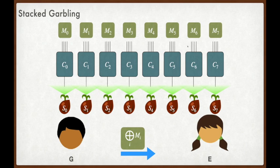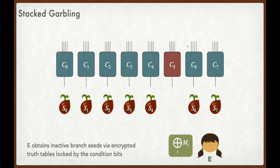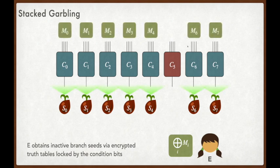The generator stacks together all of the material and sends it across the wire to E. From here, we ensure that the evaluator E will obtain inactive branch seeds via encrypted truth tables. Suffice it to say that it's relatively simple to convey to E each of the seeds for each of the inactive branches. Crucially, we will never send to the evaluator the seed corresponding to the active branch. In general, we need to handle the case where neither player knows which branch is evaluated. Let's suspend that for just a moment and suppose that E did in fact know which branch is evaluated. If she did know that C5 was the active branch, it would be relatively easy for her to correctly evaluate. The idea is that she will take each of the seeds and copy the actions of the generator to recover the material for each of the inactive branches.